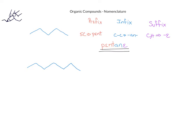We can do a similar analysis for the second molecule. In this case, we have seven carbon atoms. All of the carbon-carbon bonds are still single bonds, and we only see carbons and hydrogens, so this molecule is also a hydrocarbon with a suffix of -e. When we refer to the table for number prefixes, the prefix for seven is hept. Therefore, when we put together the prefix, infix, and suffix, this molecule will be named heptane.